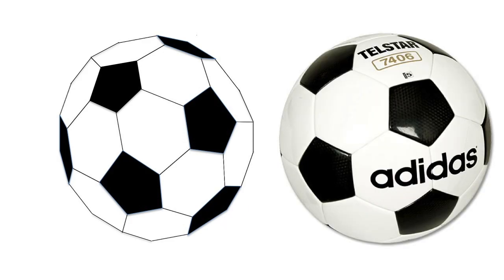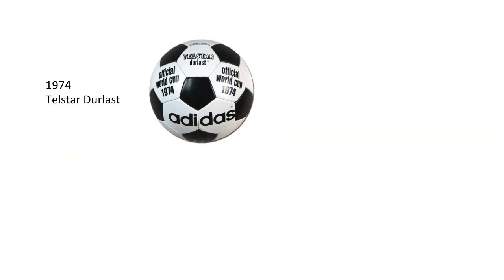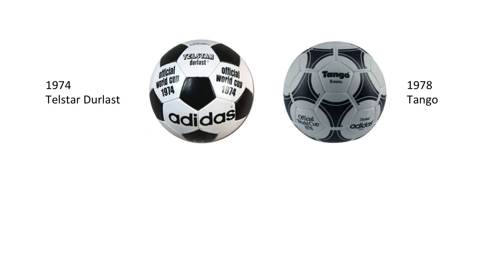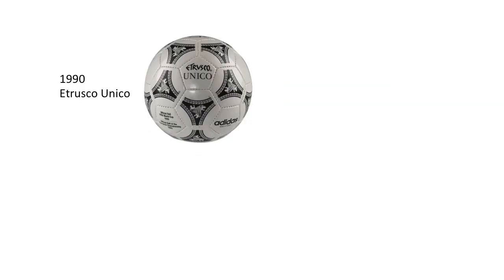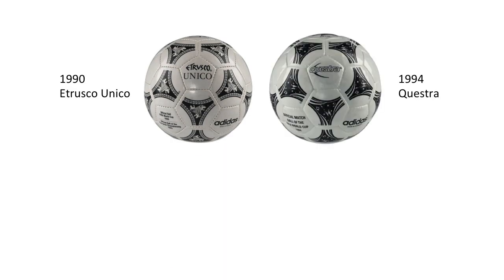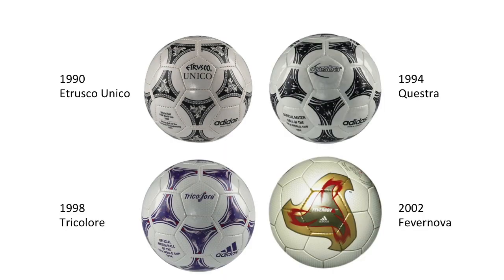Now look at the next eight World Cups: the Telstar Durlast, the Tango, the Tango Espana, the Azteca, the Etrusco Unico, the Cuestra, the Tricoleur, and the Fivanova. Although they have different printed patterns, the physical panels — 20 hexagons and 12 pentagons — are the same as the 1970 Telstar.